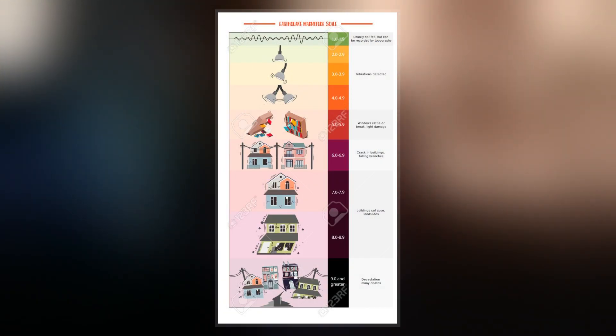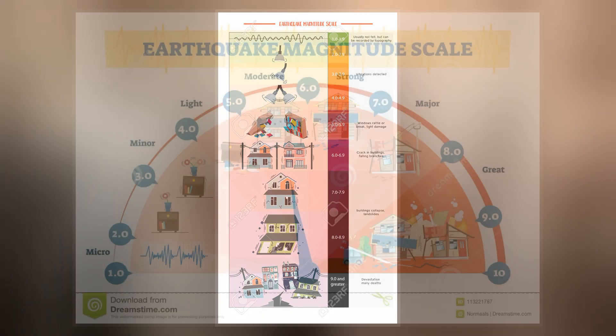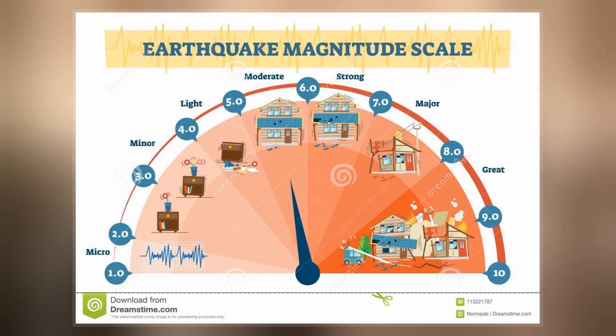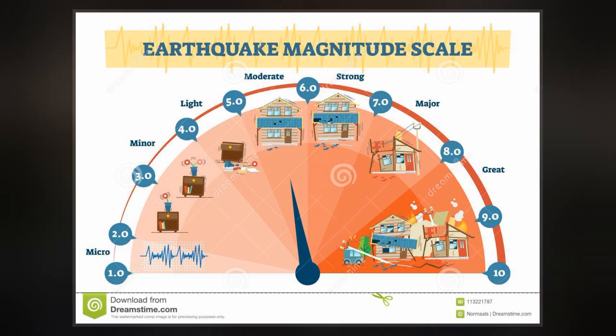In 1883, John Milne surmised that the shaking of large earthquakes might generate waves detectable around the globe, and in 1899,